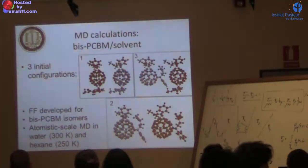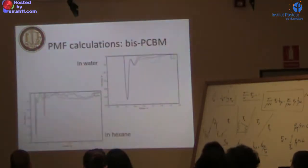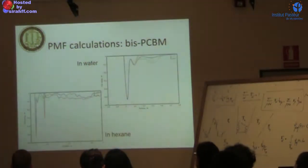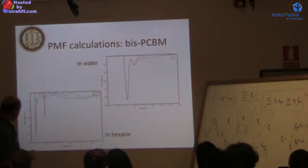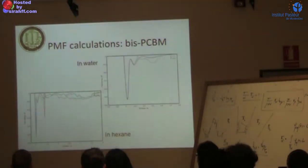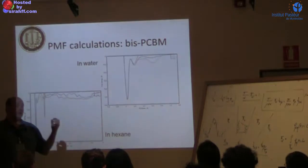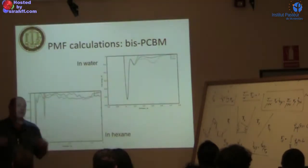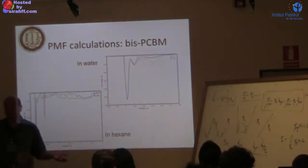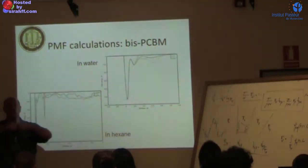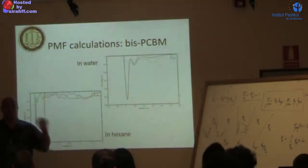We did the same for multi-adducts and got the potential of mean force as well. We see the potentials are all similar, but the distance at contact is different. Depending on how they're substituted, the cages can get closer or not, which may have significant effect on electron transport. That's especially important because they try to hit each other with the cages in close contact, especially in the bulk heterojunction.